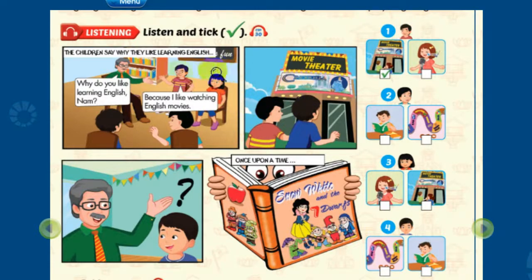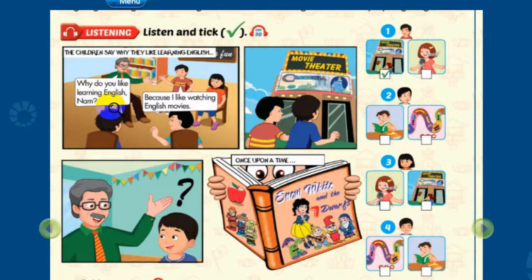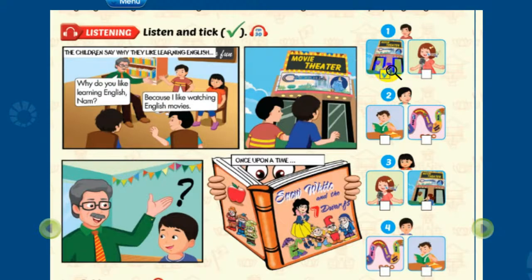1. Okay, children. Why do you like learning English, Nam? I like learning English because I like watching English movies. Good. Can you see the tick? This is an example.